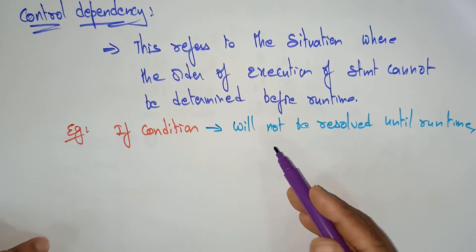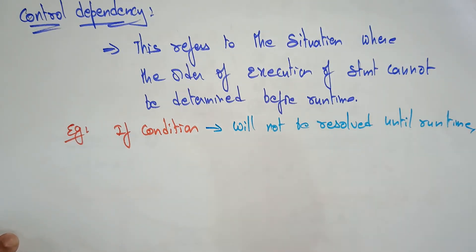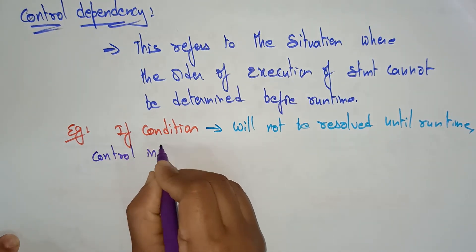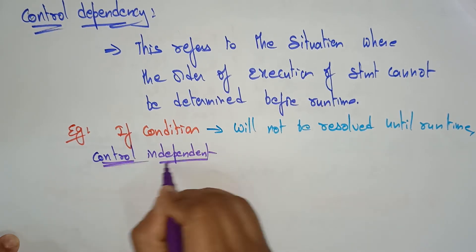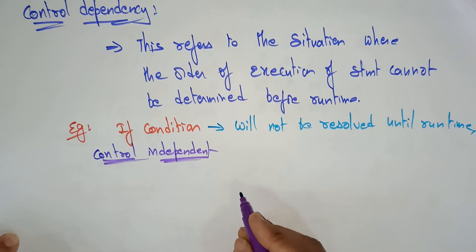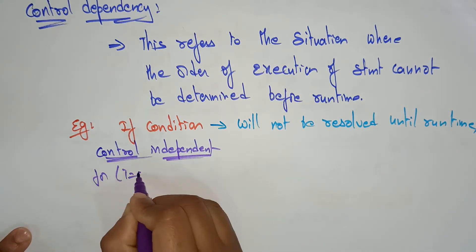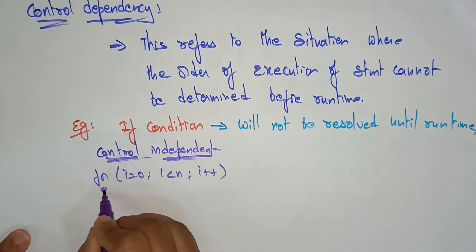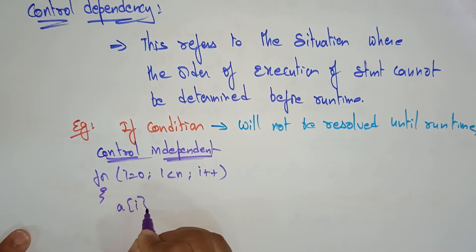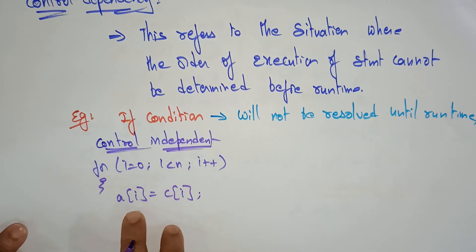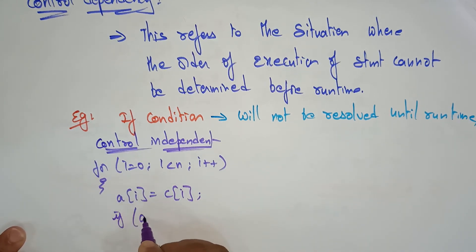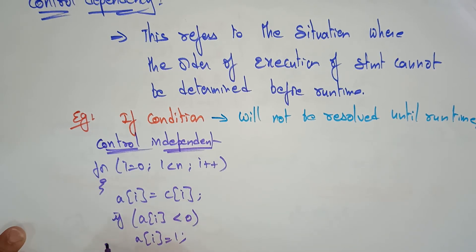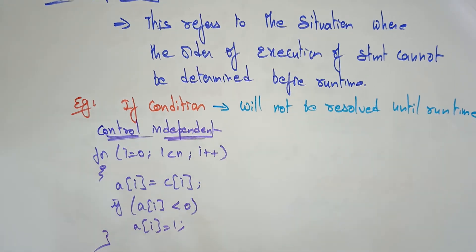Let us take a small program to understand control independence and control dependence — then you get clarity on what exactly control dependence is. First, let me explain the control independent example. Consider a for loop: for i = 0, i < n, i++. Here, I am checking a[i] = c[i] — moving the value of c[i] to a[i]. And I am checking: if a[i] is less than 0, then a[i] should be 1, otherwise not. This is a control independent example.